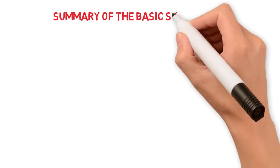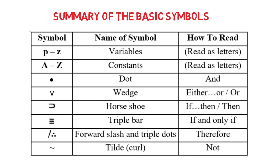Here is a summary of some of the basic symbols used in symbolic logic: The lowercase P through Z are called variables. The uppercase A through Z are called constants. A dot is read as 'and.' A wedge is read as 'either…or' or just 'or.' A horseshoe is read as 'if…then' or just 'then.' A triple bar is read as 'if and only if.' A forward slash and triple dots is read as 'therefore,' and tilde is read as 'not.'